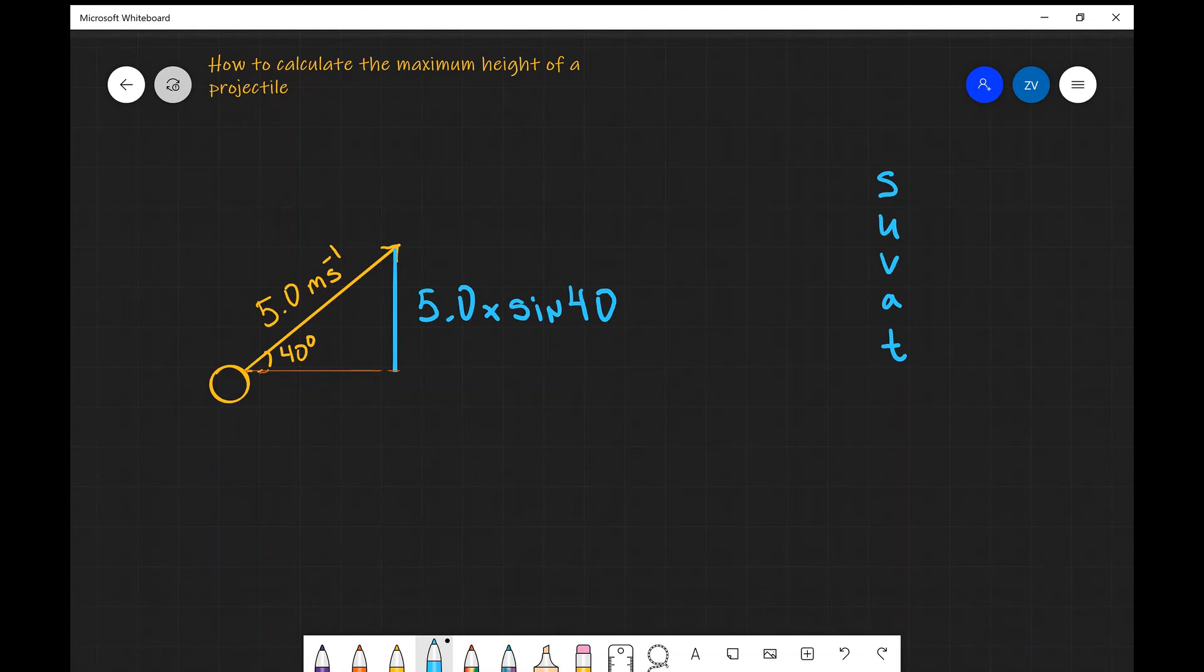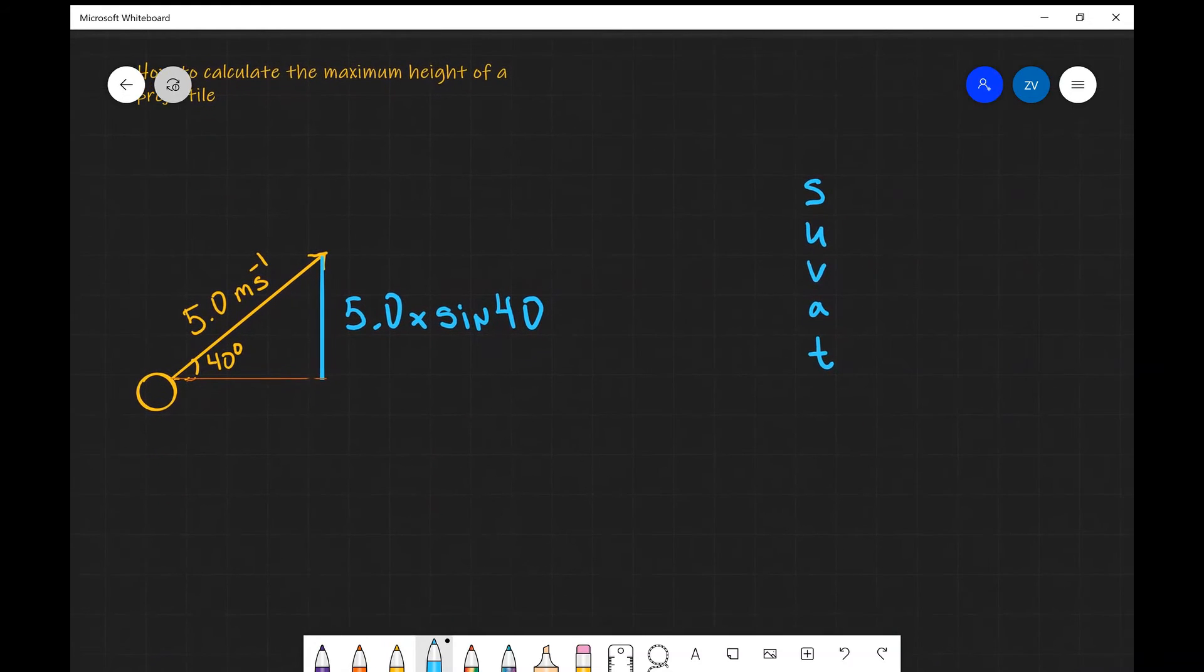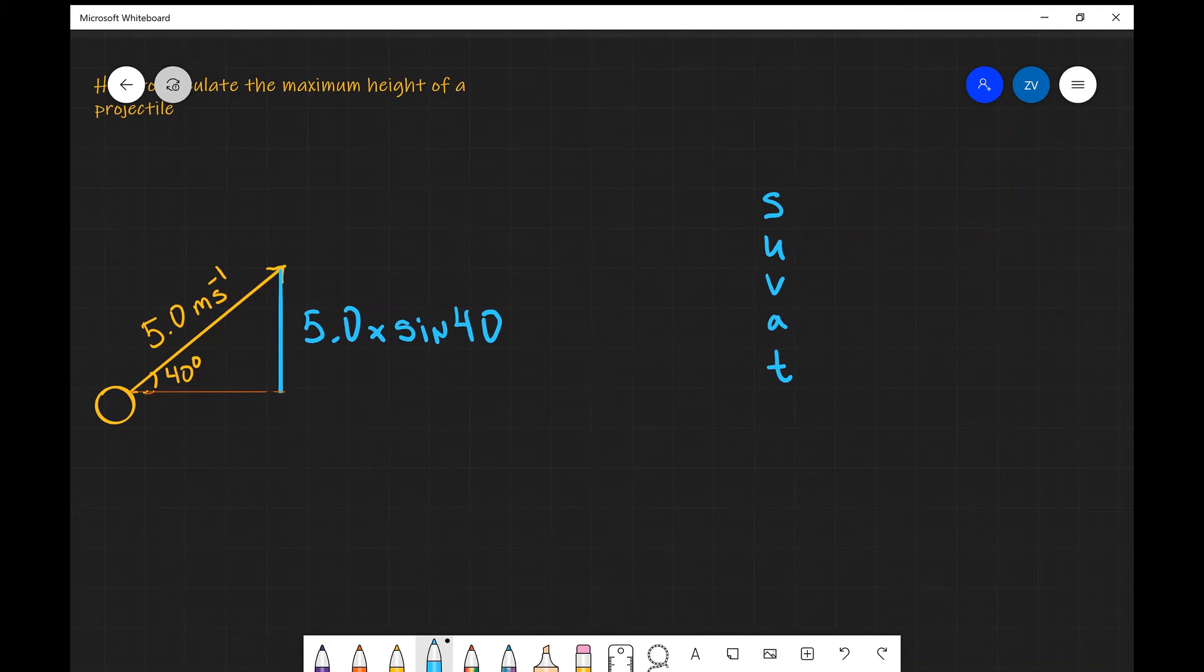Now what I'm going to be doing next is using the exact same procedure I did in the first example. However, rather than using 5 meters per second for the initial speed, what I'm going to use is 5 sin 40 for the initial speed. In other words, I'm applying the SUVAT equations in the vertical direction only.